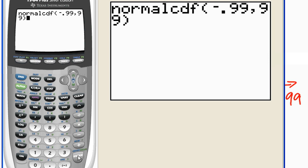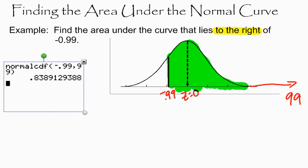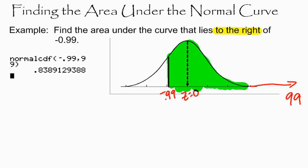I'll close my parentheses, and when I hit enter, it will give me the area under the curve between those two z-scores. So right there, I can see that the area of this green shaded region is 0.8389.